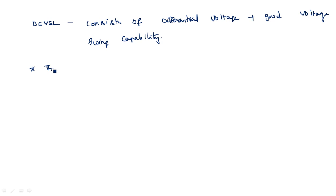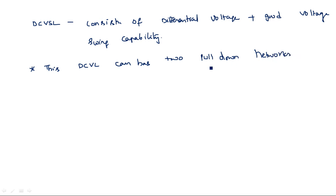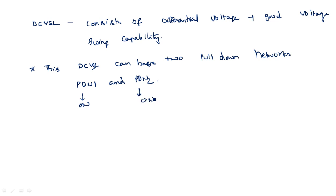Differential cascode voltage swing logic can have two pull down networks. These two pull down networks are complementary to each other — one is the complement of the other. The inputs are connected such that both pull down networks should not come into the on or off state simultaneously.